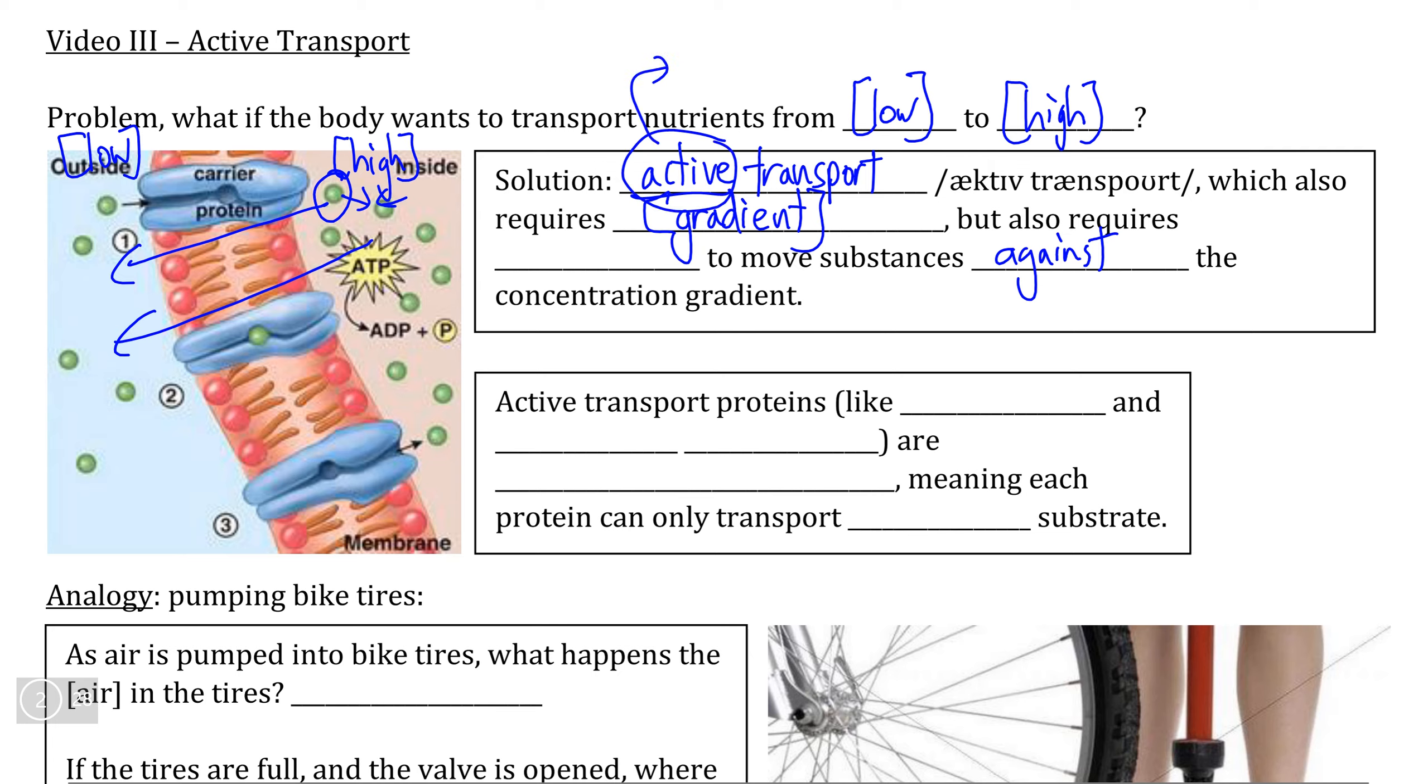Whenever there is a biological process that is defined as active, we say that process has an energetic requirement, meaning it requires an energy input in order for this process to function. And whenever we think of energy in biology, we should always think of adenosine triphosphate, ATP.